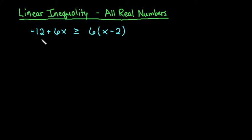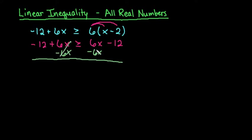So with this, what we have here is we have an inequality that has variables on both sides. So we're going to start by distributing the 6 into both of these. And so we end up with -12 + 6x ≥ 6x - 12. And when I bring the 6x to the opposite side, so when I bring this over here, my 6x cancels out on both sides.